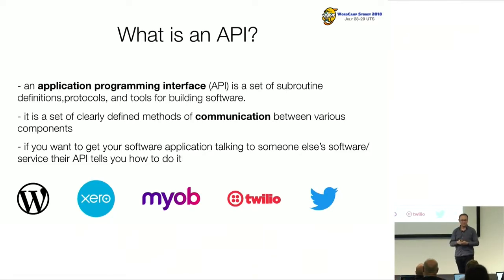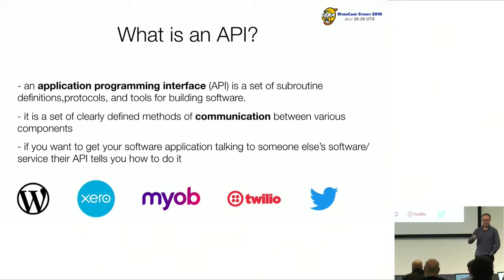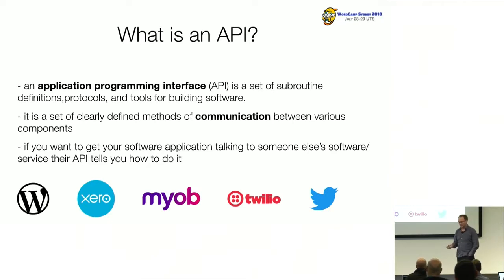For those not familiar with what an API is — API stands for Application Programming Interface. I like to think of it as a document that sets out the rules for getting my software talking to your software. APIs are everywhere these days; there are companies built on APIs. Twitter, Twilio — which is built around APIs for messaging and voice — and in the accounting space in Australia and New Zealand, Xero and MYOB have APIs with big developer ecosystems built around them. And of course, WordPress itself and WooCommerce.